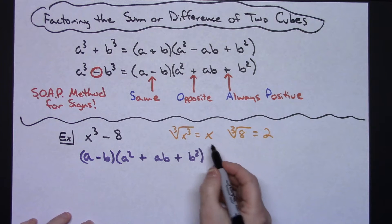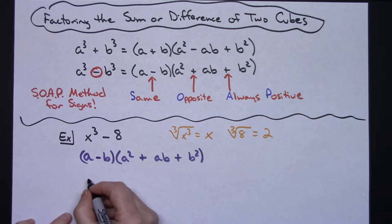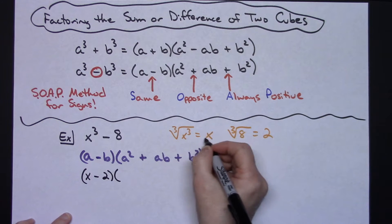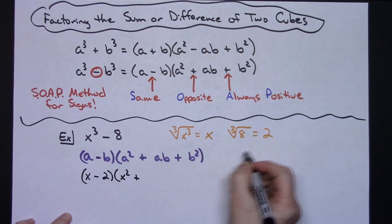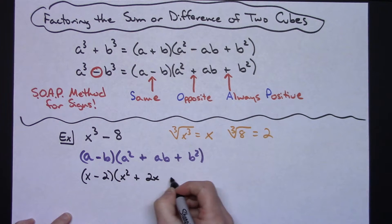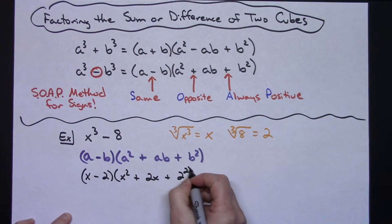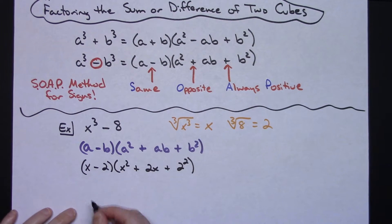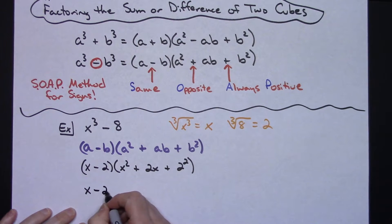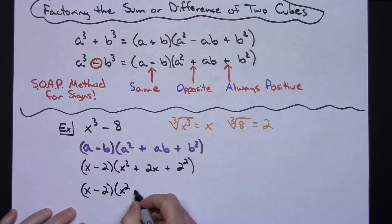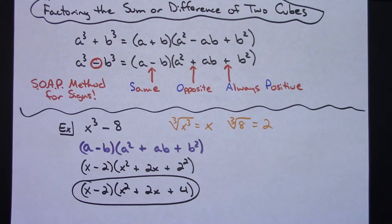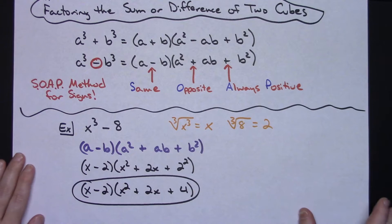My a is x and my b is 2, so this is going to be x minus 2, then x squared plus 2 times x which gives 2x, then b squared — 2 squared. Sometimes you can do that in your head, sometimes you can't. The final answer would be x minus 2 times the quantity x squared plus 2x plus 4. That one was pretty straightforward — the cube roots and the squaring were not too difficult.